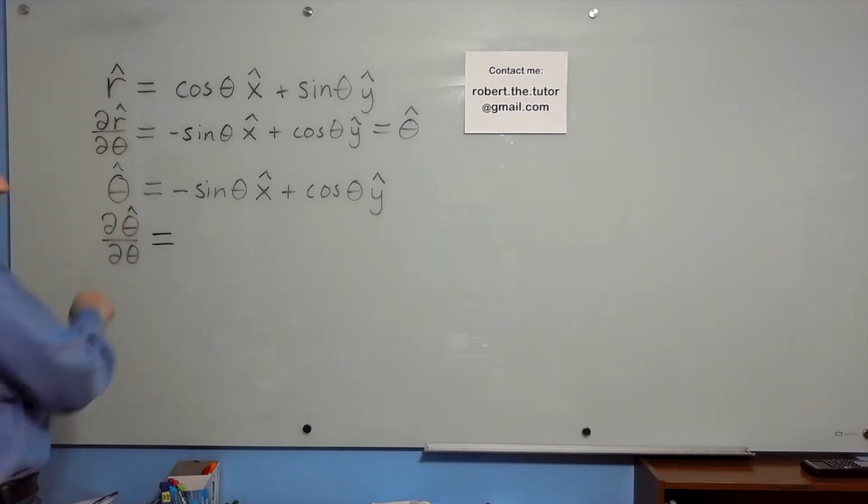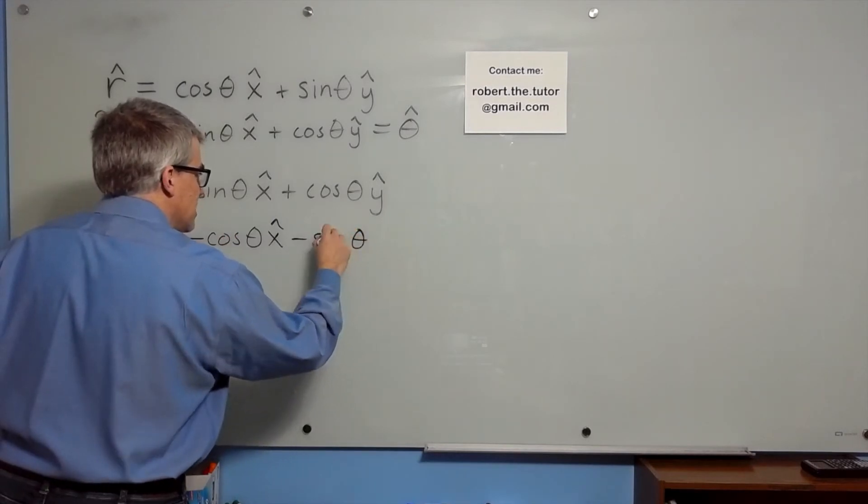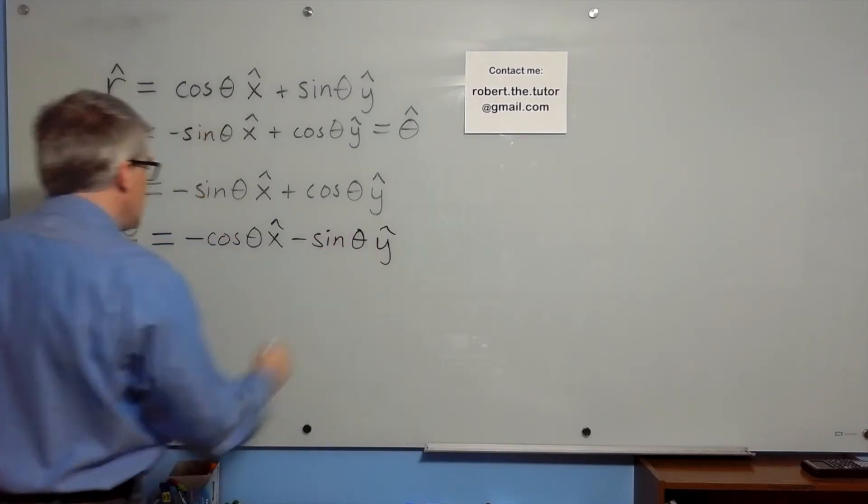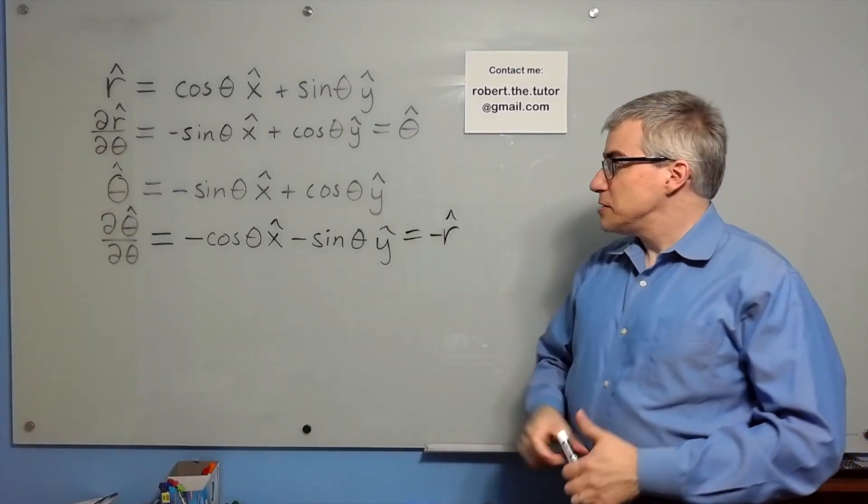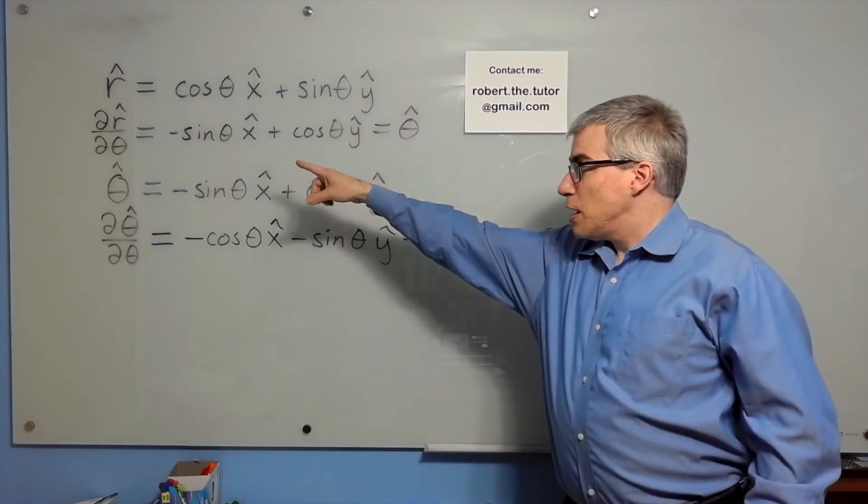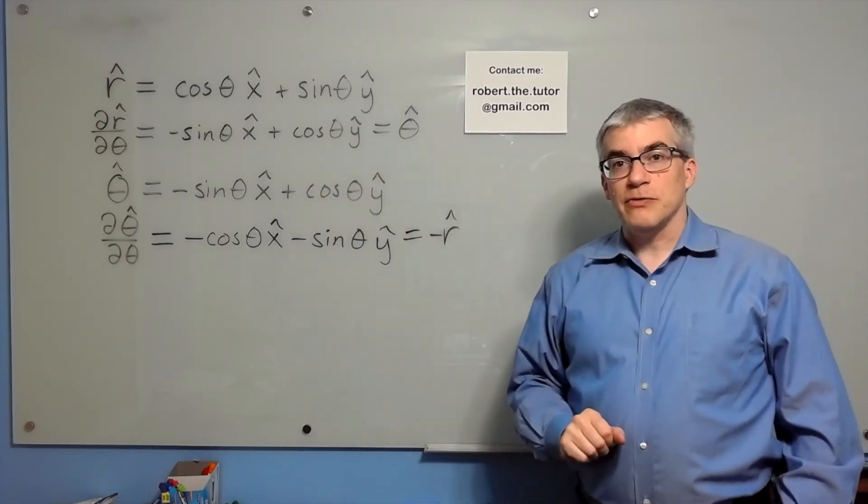Meanwhile, if you take the derivative of theta-hat with respect to theta, the derivative of sine is cosine. The derivative of cosine is negative sine. And you can see that that is the opposite of r-hat. And there's your instant proof that the derivative of r-hat with respect to theta is theta-hat. The derivative of theta-hat with respect to theta is negative r-hat.